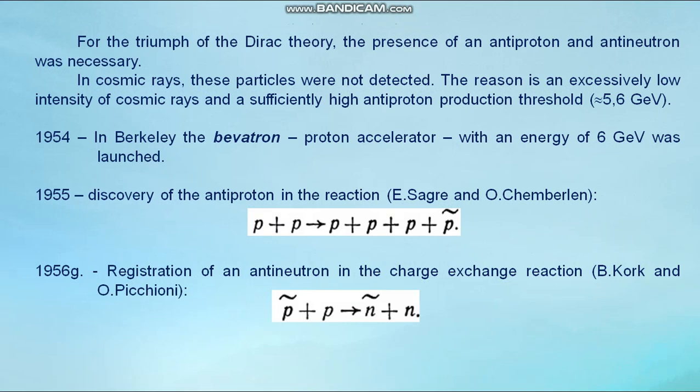1954, in Berkeley, the bevatron proton accelerator with the energy of 6 GeV was launched. 1955, discovery of the antiproton in the reaction, Segrè and Chamberlain. 1956, registration of antineutron in the charge exchange reaction, Cork and Piccioni.